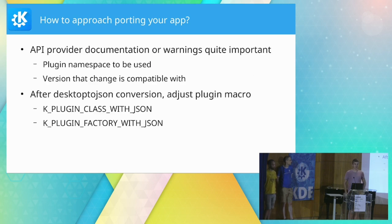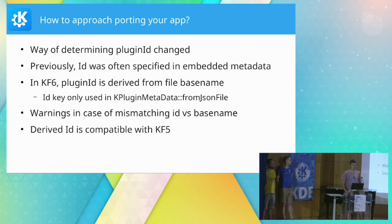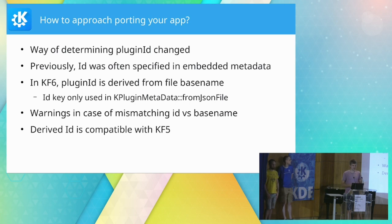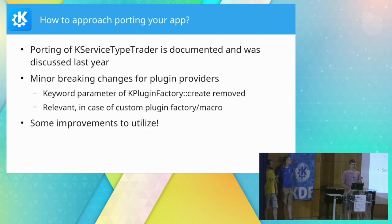When actually doing the porting, the plugin system is one of the major challenges. In KF6, both the runtime and build-time JSON conversion were removed — that includes the `KPluginMetaData::fromDesktopFile` method and also the `kcoreaddons_desktop_to_json` CMake function. But the `desktop-to-json` CLI tool for manual conversion is still kept — and if you're wondering why this doesn't have a major version, it was removed in KF6 so we don't have to worry about co-installability. You can still use it from the KF5 `KCoreAddons`. When you encounter deprecation warnings regarding the plugin system, the documentation and the console warnings are quite important — they tell you what plugin namespace should be used and which version the change is compatible with.